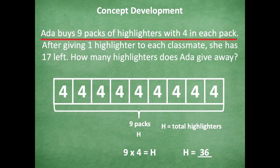You could do this a couple of different ways — you could count by fours, use the commutative property and count by nines four times, or use the finger trick where you put down that fourth finger and you have three tens and six ones to make 36. Whichever strategy you chose is awesome, as long as you came up with H equals 36, the total number of highlighters.